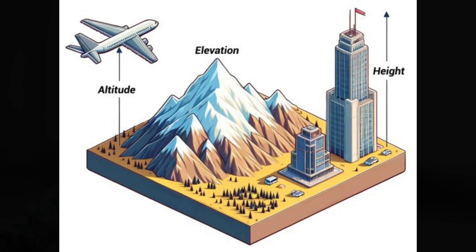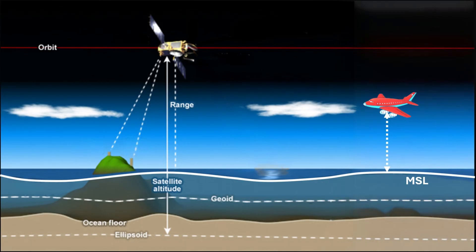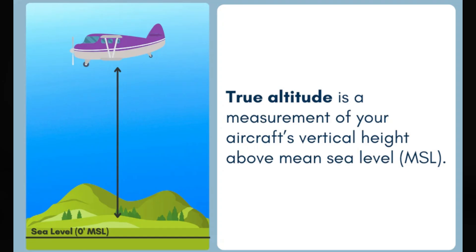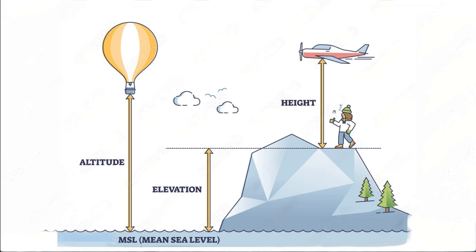Altitude usually refers to something high up, like an aircraft in flight or a spacecraft in orbit. There are at least three different types of altitudes. Mean sea level altitude is the height of the aircraft above the mean sea level — essentially the same baseline measurement as elevation, except it typically refers to something in flight or submerged in water but above the seabed.